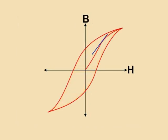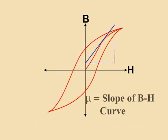The slope of the BH curve tells us the value of the magnetic permeability of the material.